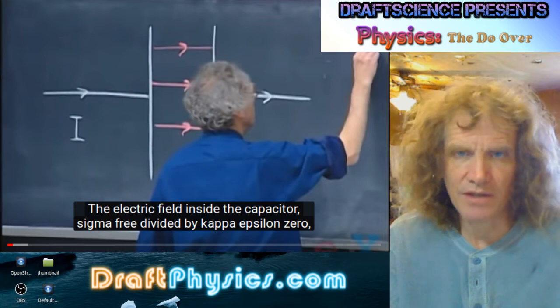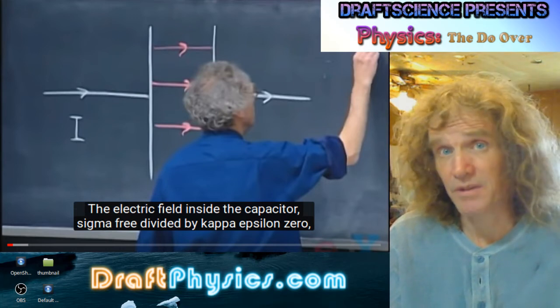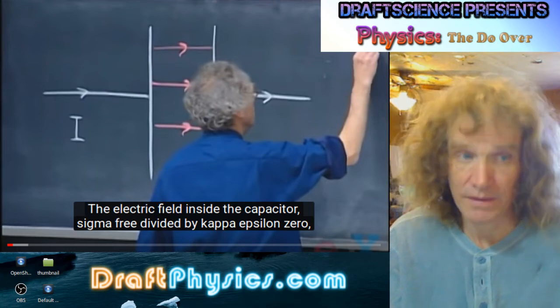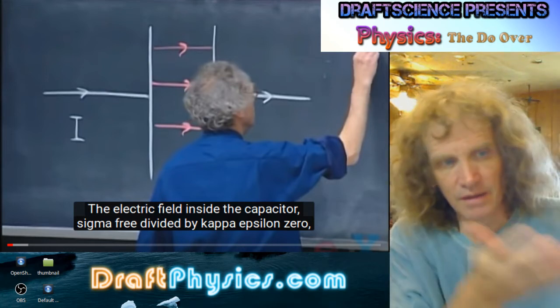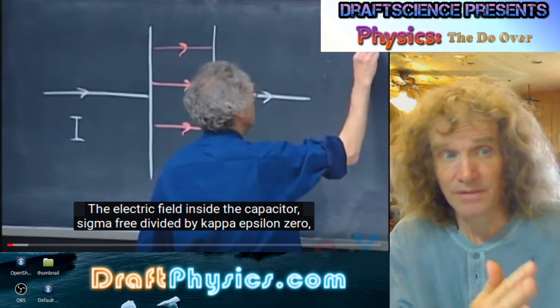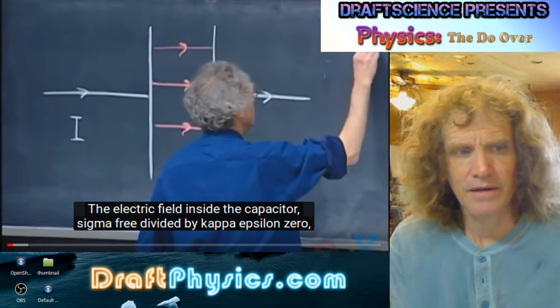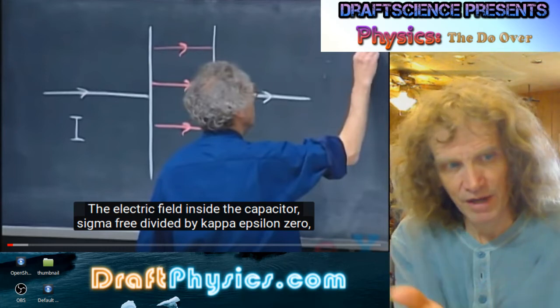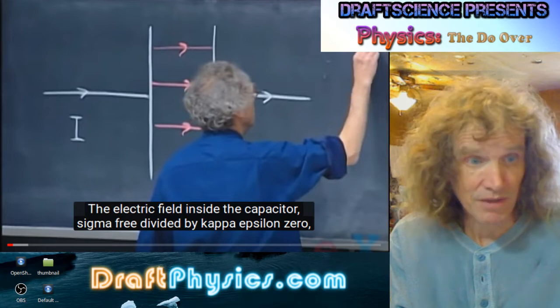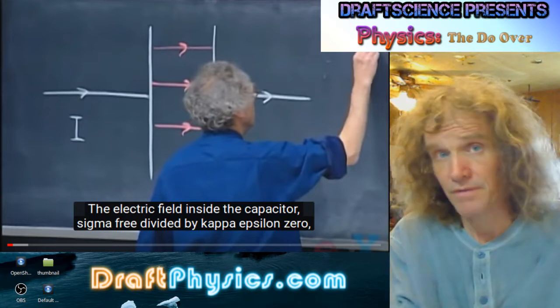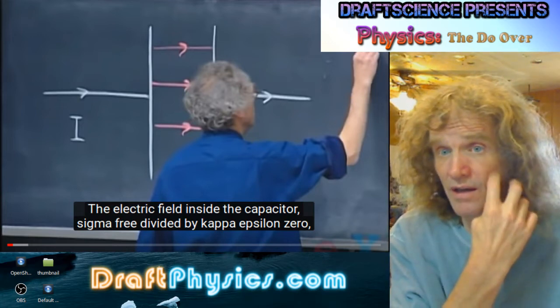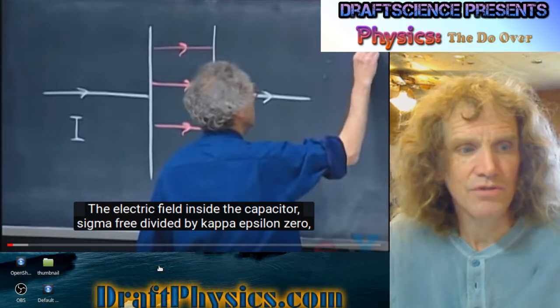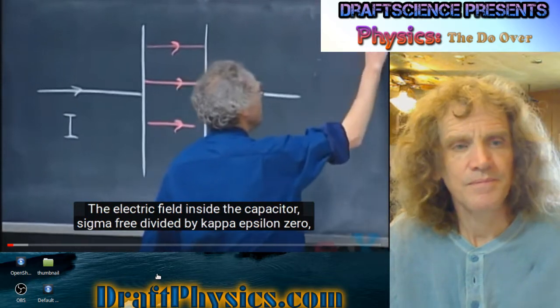So again, with this changing electric field, just meaning there's a difference, a potential difference, a voltage difference, and the voltage difference requires there to be an exchange. It's charging a surface that's not charged, and it'll do so until the two plates have an equal voltage.